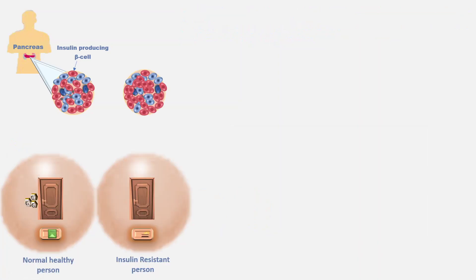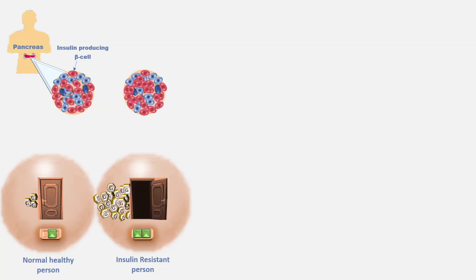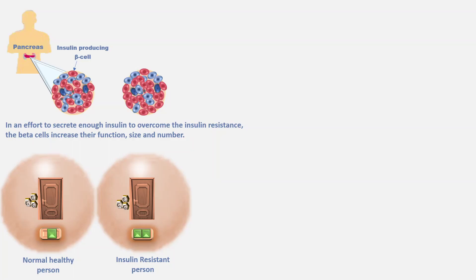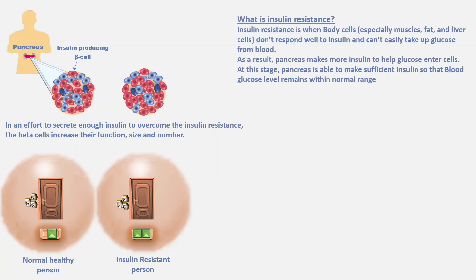Now, in a person with an unhealthy lifestyle, some of the body cells stop responding to insulin — that is, these cells become insulin resistant. When glucose enters the blood, the pancreas makes insulin and it binds to the receptor, but there is no response as the cell is less sensitive to insulin. As the level of glucose in the blood is still high, the pancreas makes more insulin. It binds to the receptor, the receptor responds, and the cell takes up glucose. Beta cells, in an effort to secrete enough insulin to overcome insulin resistance, increase in function, size, and number. So the pancreas of a person with insulin resistance makes more and more insulin to help glucose enter the cell.